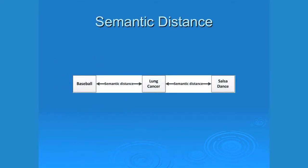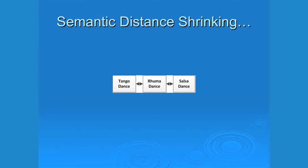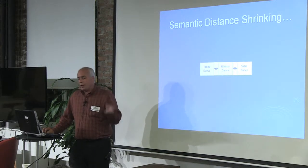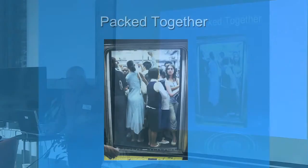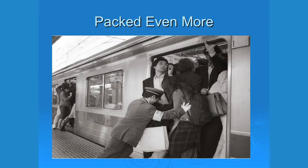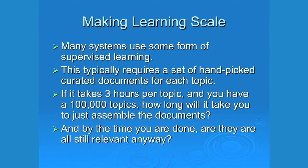A lot of the difficulty is fairly common sense. If you have topics that are really distinct from each other — like baseball, lung cancer, and salsa dancers — it's pretty simple to tell them apart. But as things get closer together it gets much harder. As the number of topics increases, more and more topics overlap, and this leads to problems.